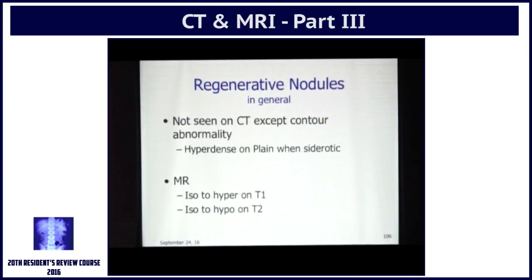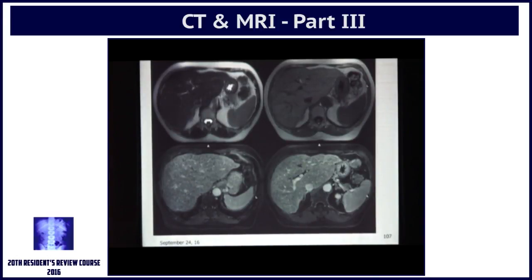usually multiple, are regenerative nodules. These are normally not seen on CT, but on MR they tend to be iso to hyper on T1, and hyper because they are of hepatocytic origin — that is why normal liver is brighter than normal spleen. So hyper intense on T1 and hypo on T2-weighted images.